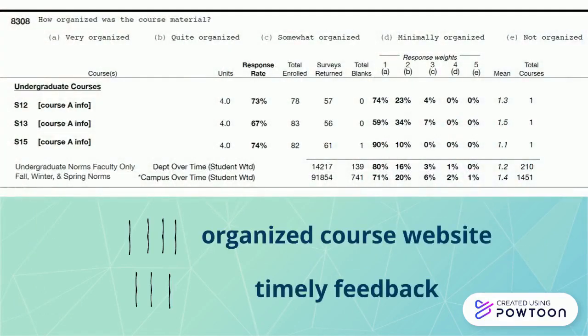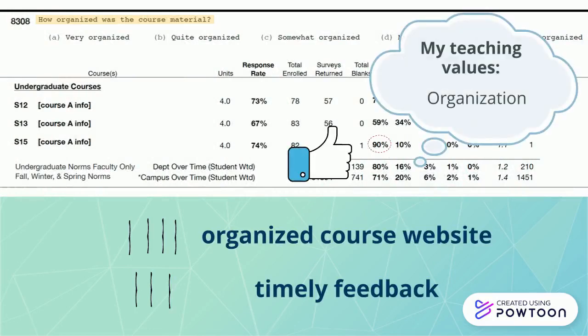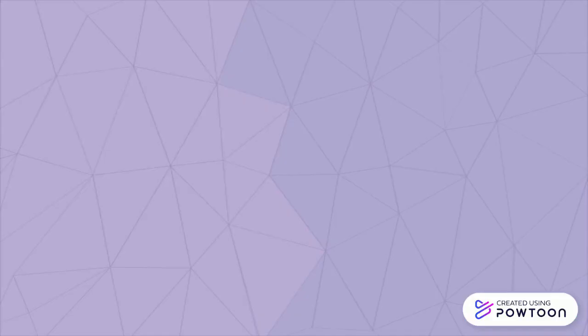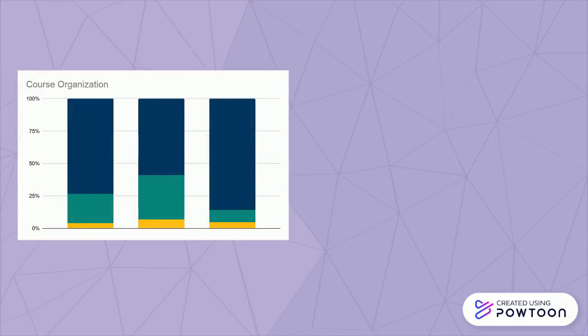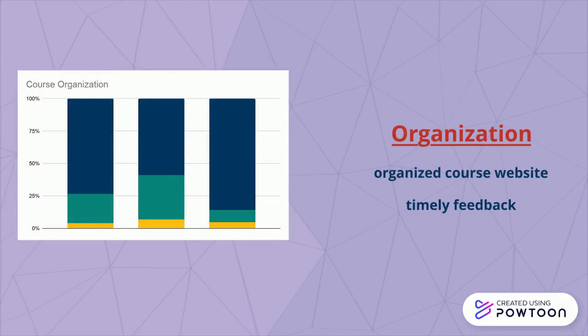Next, compare the tallies with your scalar analysis. Are there comment categories that provide insight about the scalar analysis? What categories relate to your teaching values? If you are comparing over time, think about what themes or stories your combined data tell about your teaching.